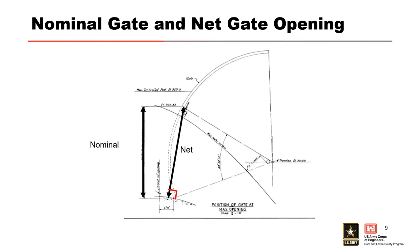Calculating the net gate opening requires a solid understanding of geometry and trigonometry. The nominal gate opening and net gate opening are typically not the same value — you can see in the picture that one is a vertical distance and one is a diagonal distance perpendicular to the flow. Always use the net gate opening when calculating discharge rating curves, and use the nominal gate opening when reporting and publishing discharge rating curves.